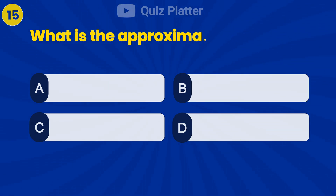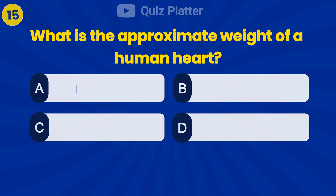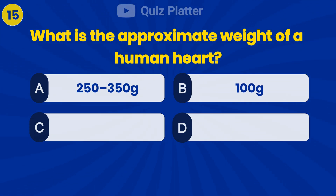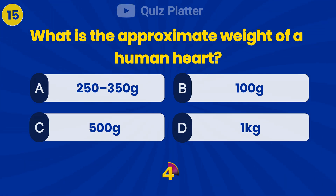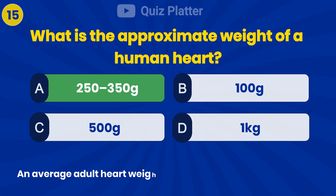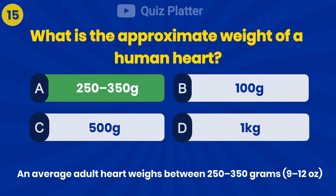What is the approximate weight of a human heart? Answer A: 250 to 350 grams.